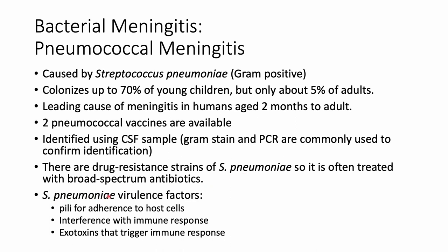Streptococcus pneumoniae has specific virulence factors: pili for attachment, enzymes that interfere with immune responses, and the ability to form a capsule — which is what the conjugate vaccine targets to prevent immune evasion. It can also release exotoxins that trigger a more exaggerated immune response.